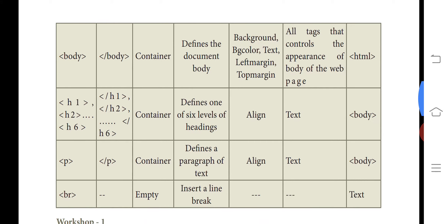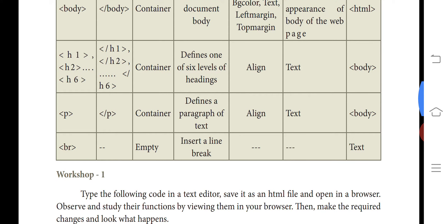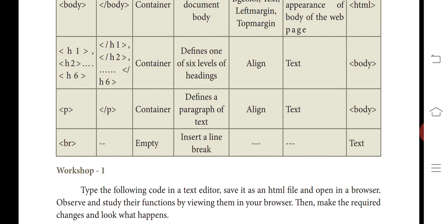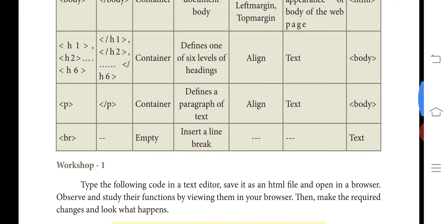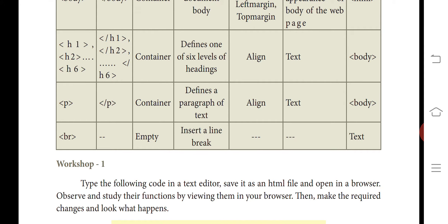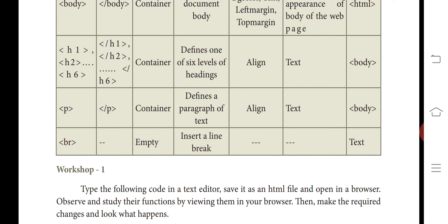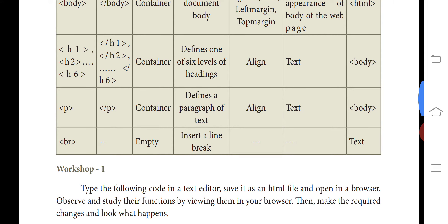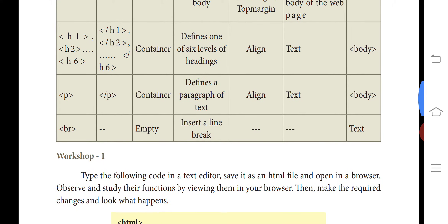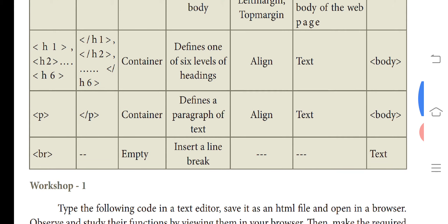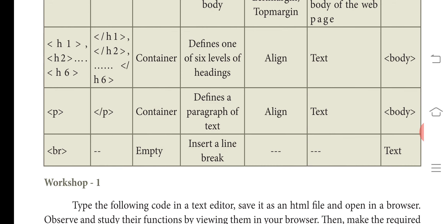The heading tags are h1 through h6 — remember there are six levels: h1, h2, h3, h4, h5, and h6. Their closing tags are slash h1 through slash h6. Since they have both opening and closing tags, they are container tags. They define one of six levels of heading. The attribute used in heading tags is align.